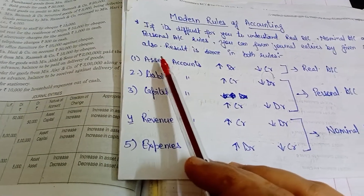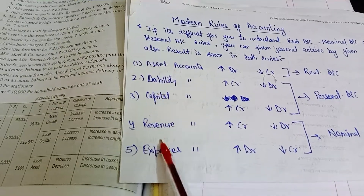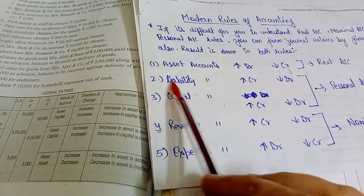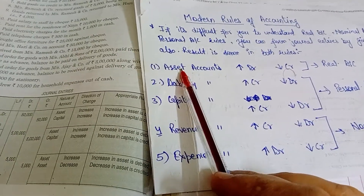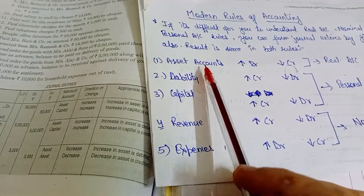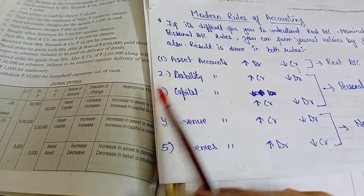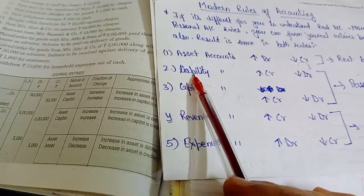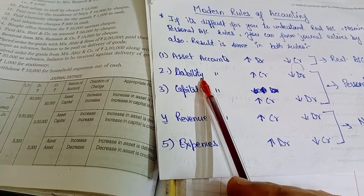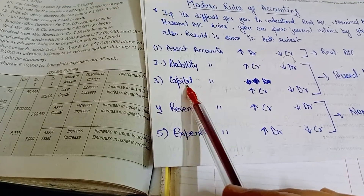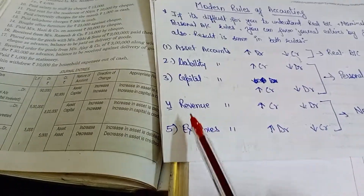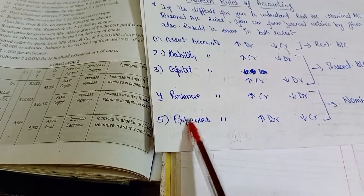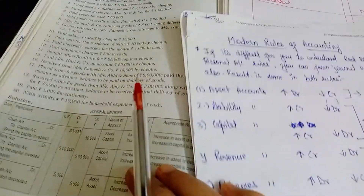When reading any transaction we should know which account is being affected so we can do the journal entry easily. Assets are things like building, cash, land, and debtors. Liabilities are those which we have to pay, like creditors and bills payable. Capital is what the proprietor or businessman invests in the business. Revenue is our income, and expenses and losses follow the expense rule.